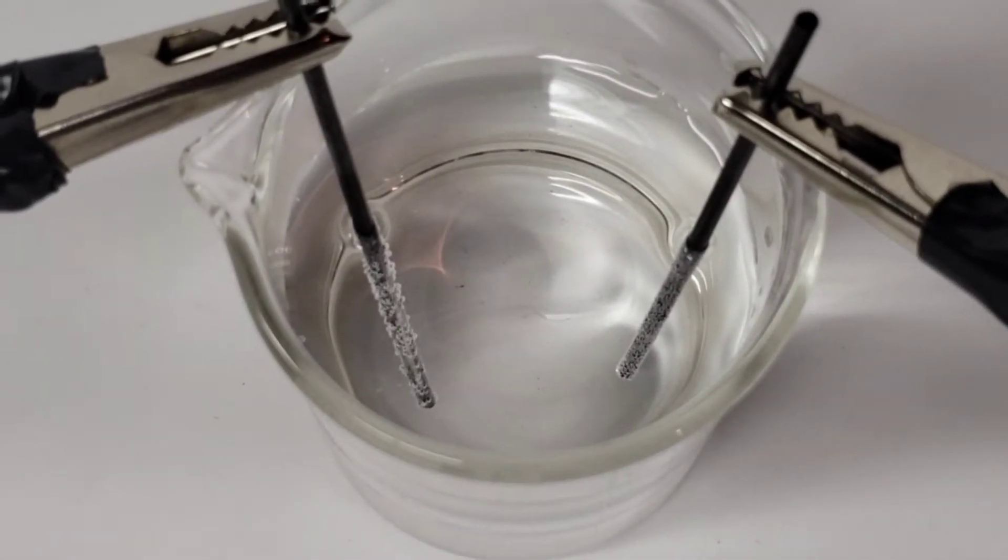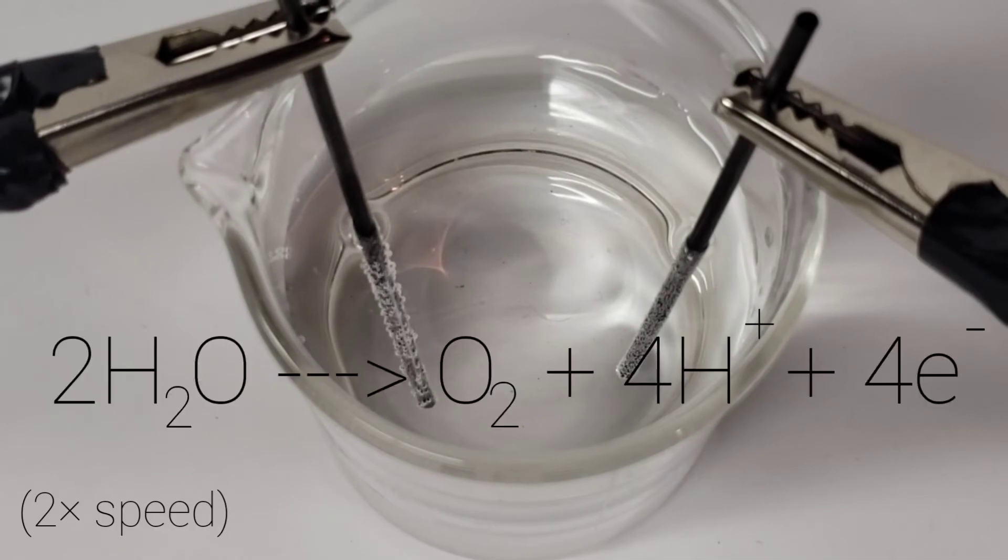I'll start with the anode reaction, which is up on screen right now. Two molecules of water yield to form one molecule of oxygen gas, along with four positive one hydrogen ions, which are essentially just protons, and four electrons. So basically the water split apart into oxygen and hydrogen, and then the hydrogen in turn split up into the protons and electrons. That's maybe not a great way of explaining it, but it sort of gives an idea of what happened.